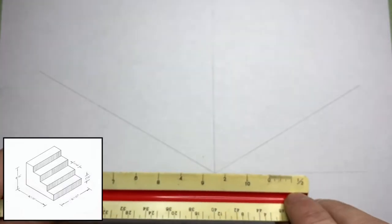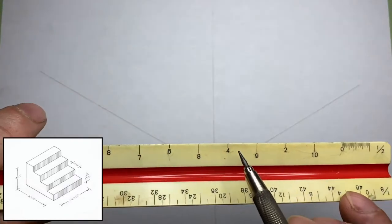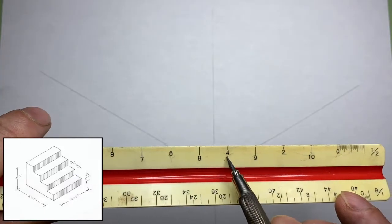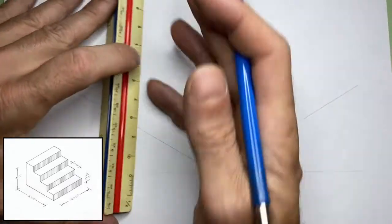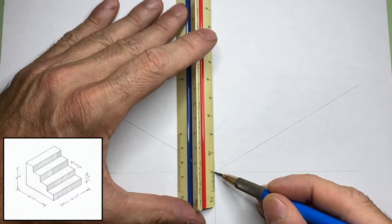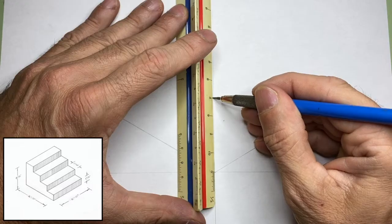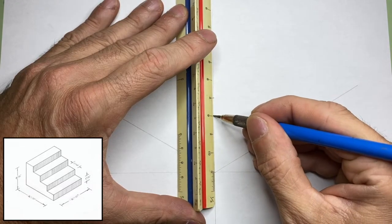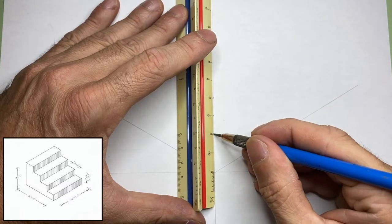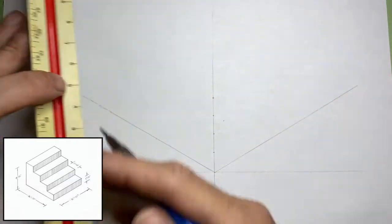Now we'll determine the height of each step or the rise. For this exercise we'll do four steps each at one foot. On the vertical height line I'll put a dash at the four foot, the three, the two, and the one. This is all drawn in half-inch scale.